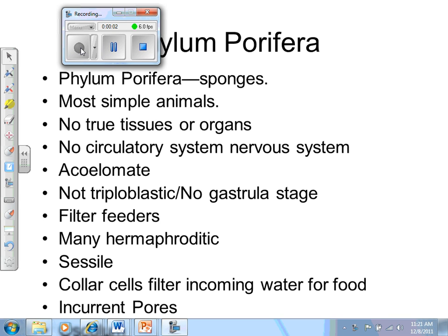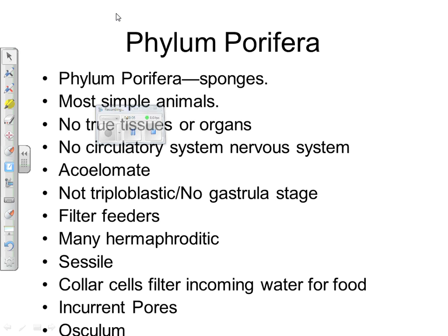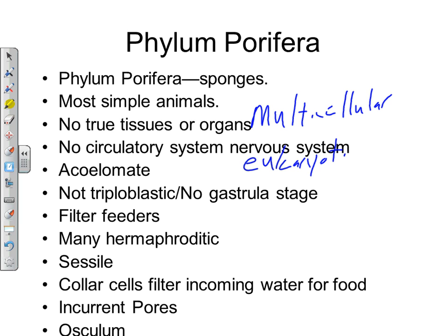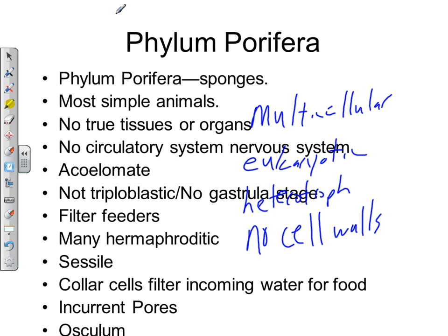Today we're going to talk about animals, but first let's discuss what makes an animal an animal at the cell level. All animals are multicellular, eukaryotic, heterotrophic — meaning they have to eat and can't do photosynthesis — and unlike many other organisms, they don't have cell walls. Any organism whose cells share these four characteristics is classified as an animal.